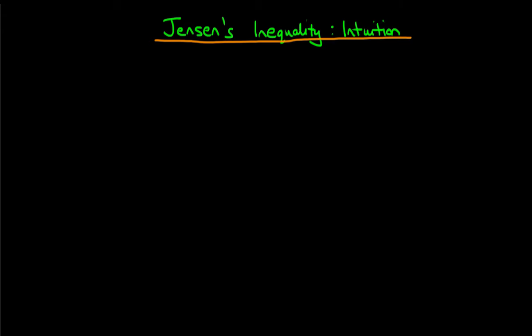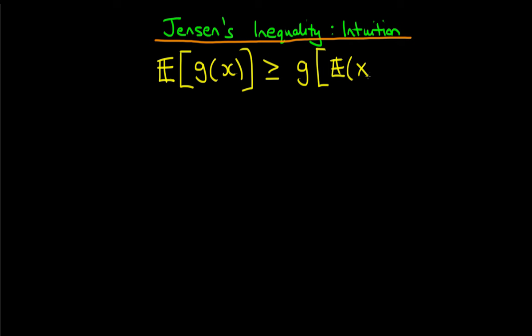In this video, I want to talk about the intuition behind Jensen's inequality, which, if you remember, can be written as: the expected value of some function g of x is always greater than or equal to g of the expected value of x. And this is true if, and only if, g is convex.